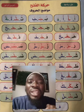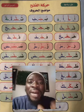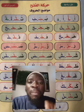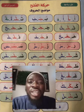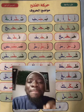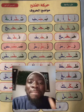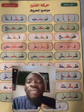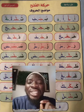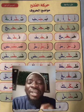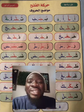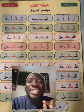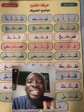The second letter is Ba. So Ba with Fathah, we sound BA, BA, BA. Then for Ta — Ta with Fathah, we sound TA, TA, TA.